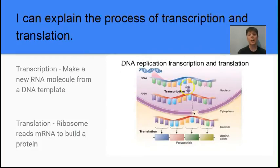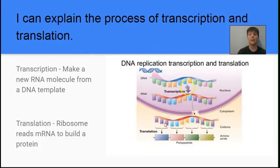Our next learning target is to explain the process of transcription and translation. Transcription means that we are building a new RNA molecule from a DNA template — the DNA is pre-existing and is used to make a new RNA molecule, happening inside the nucleus. Once the RNA is produced, it leaves the nucleus, travels to the ribosome, where the information in the messenger RNA is read by the ribosome and used to put together a polypeptide — a chain of amino acids.